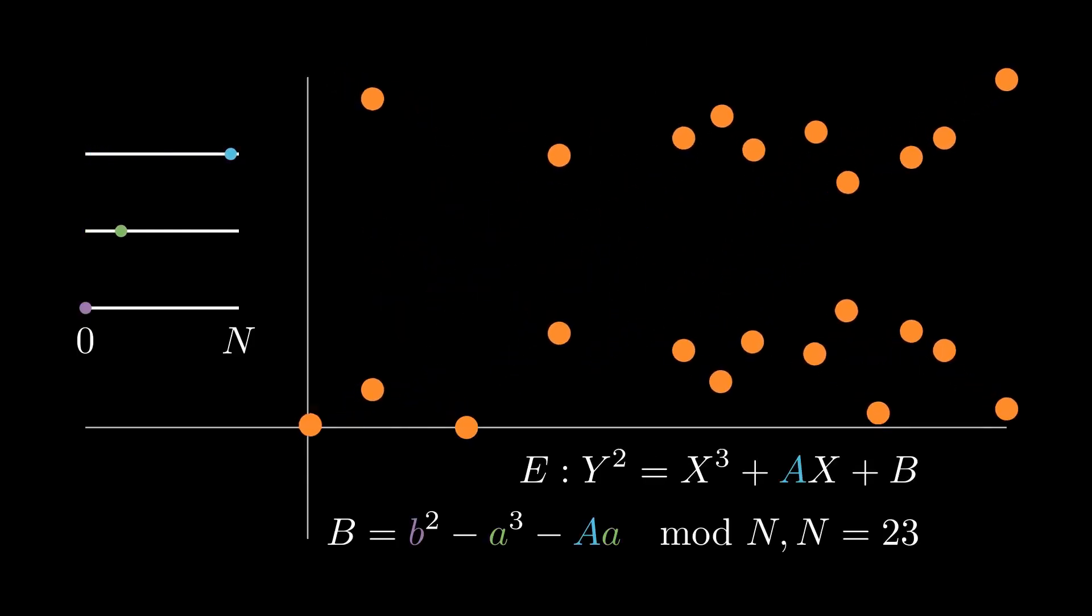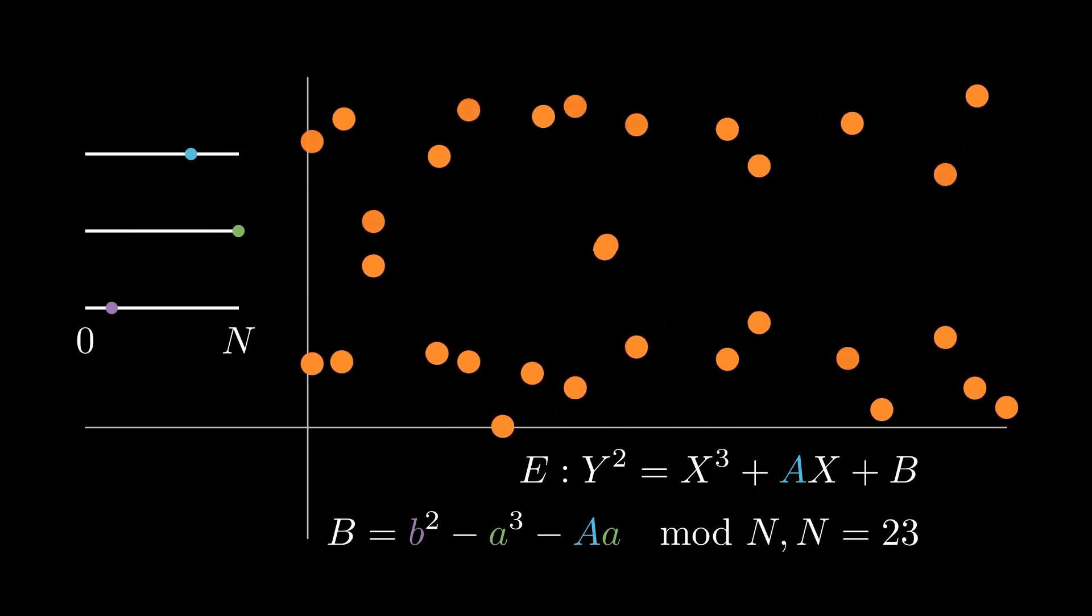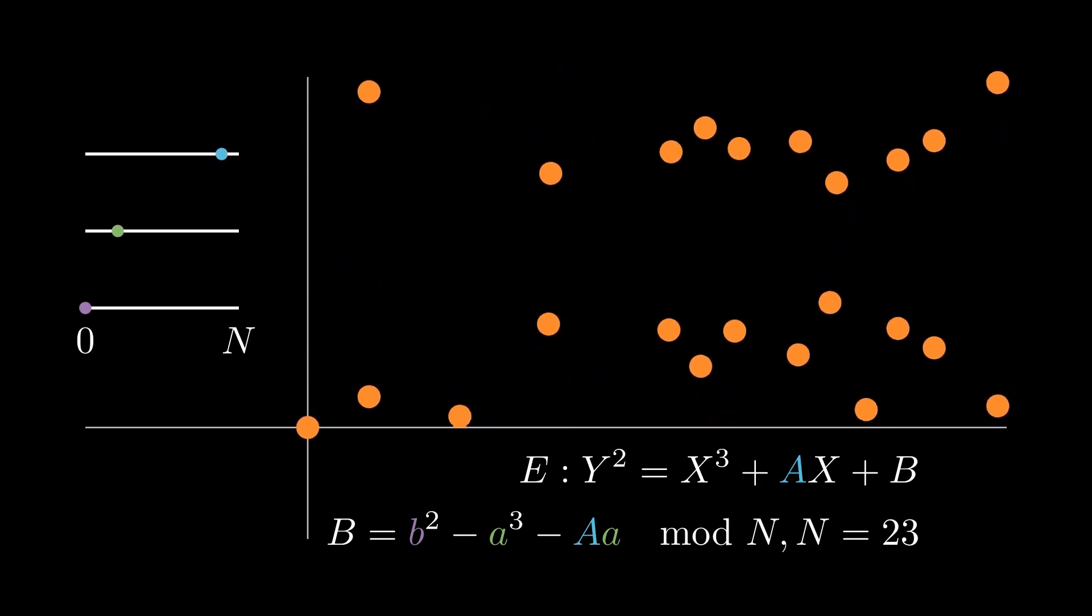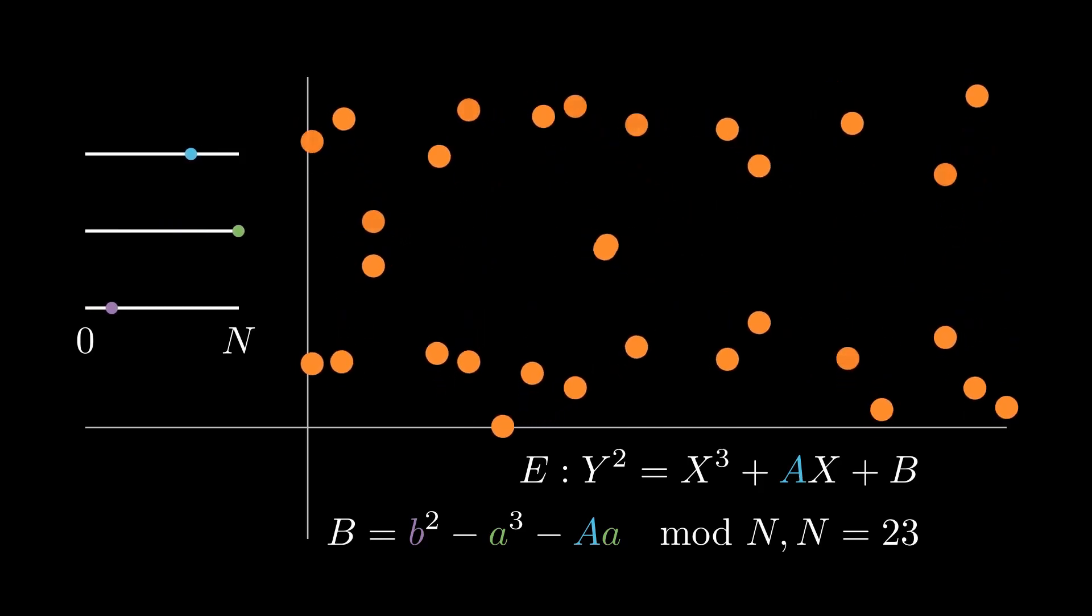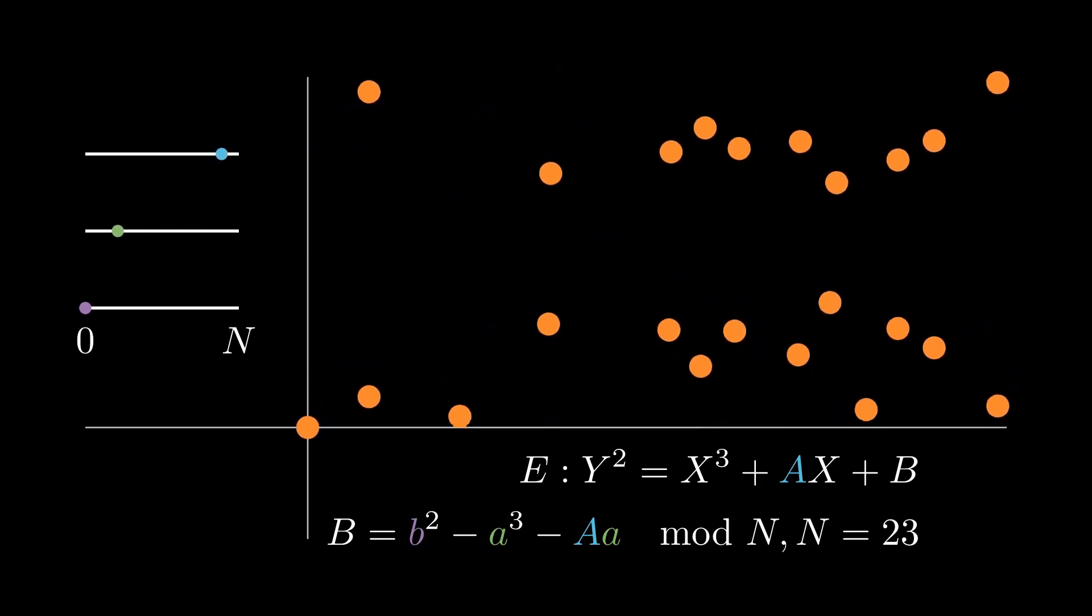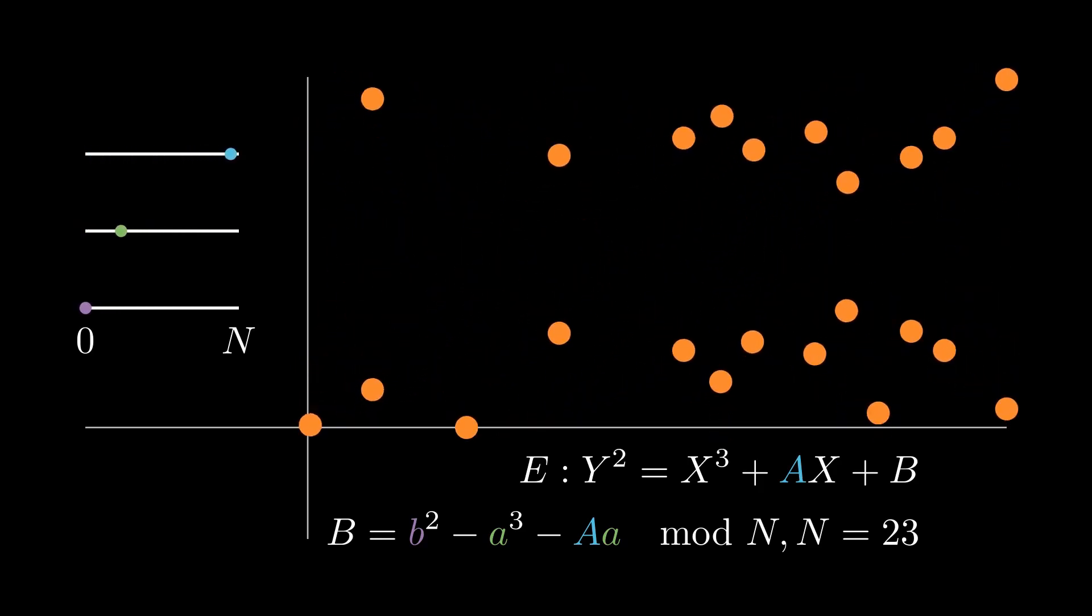The algorithm leverages this idea, and it takes random elliptic curves and keeps adding point to itself repeatedly until we run into a point addition that makes us run into a GCD that's not equal to 1. It stands to say that this algorithm, invented by Hendrik Lenstra, Lenstra's elliptic curve factorization algorithm, is an incredibly clever algorithm.